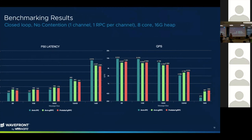For larger message sizes — 10 MB and 100 MB — the pattern holds: Avro-over-gRPC is about 20% slower than protobuf-over-gRPC in absolute terms, but Avro-over-gRPC is only about 5–10% off versus protobuf-over-gRPC. That's the consistent pattern we observed.